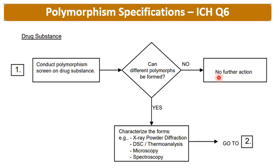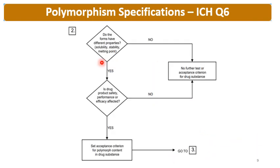If different polymorphs can potentially form, characterize the forms using X-ray powder diffraction, DSC, thermoanalysis, microscopy, and spectroscopy. Then assess: do the forms have different properties like solubility, stability, or melting point? If no difference exists, no further testing or acceptance criteria are needed. If differences exist, the next question is whether the drug product's safety, performance, or efficacy is affected.